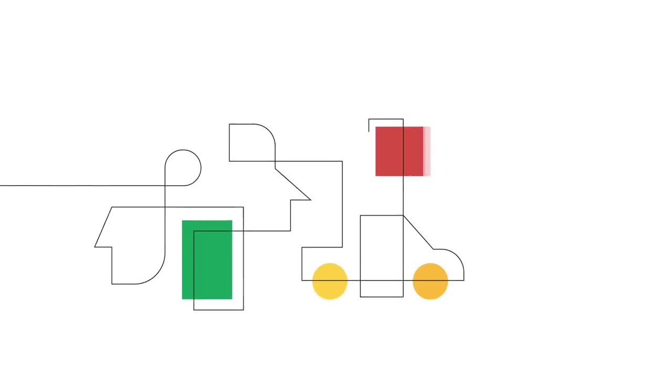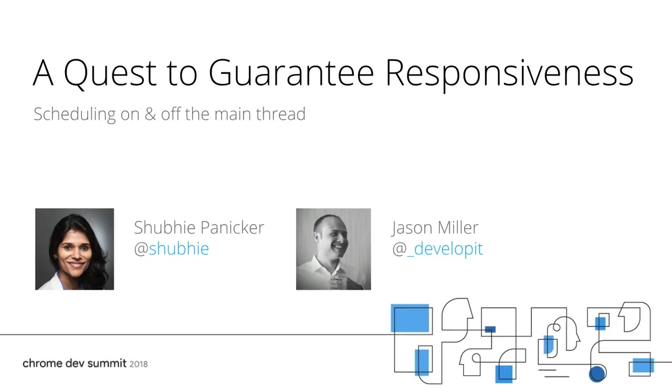My name is Shubi Pannicker. I'm a software engineer working on the web platform in Chrome. And I'm Jason Miller, a DevRel for Chrome. Our talk today is about a key strategy for runtime performance of web apps: scheduling of JavaScript on the main thread, as well as approaches for moving script off the main thread. We've both been deep in this space, exploring gaps and APIs for what we are calling achieving responsiveness guarantees. We're excited about the opportunity here, both with existing primitives as well as the new APIs we will show in our talk.